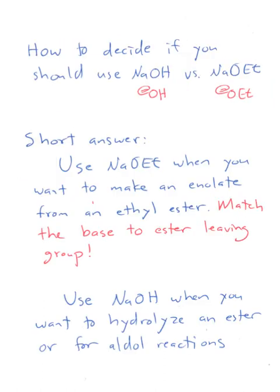So to summarize, how do you decide if you use sodium hydroxide or sodium ethoxide to make an enolate? Well, the short answer: Use sodium ethoxide when you want to make an enolate from an ethyl ester. In other words, always match the base to the ester leaving group. We use sodium hydroxide when you want to hydrolyze an ester or for aldol reactions.